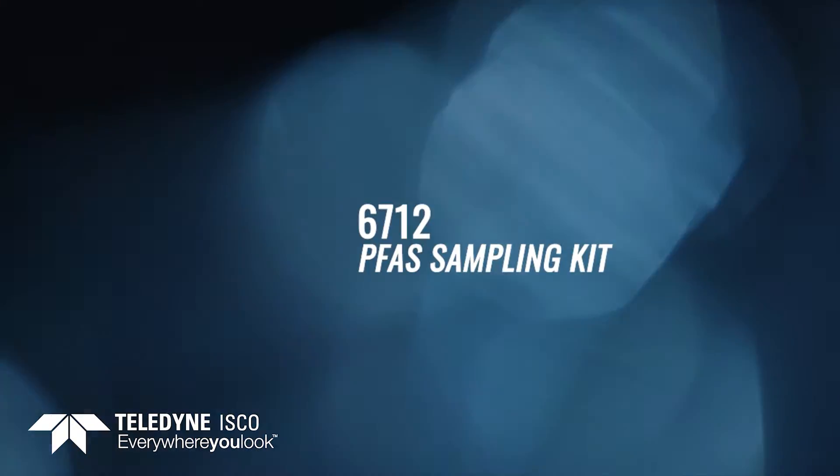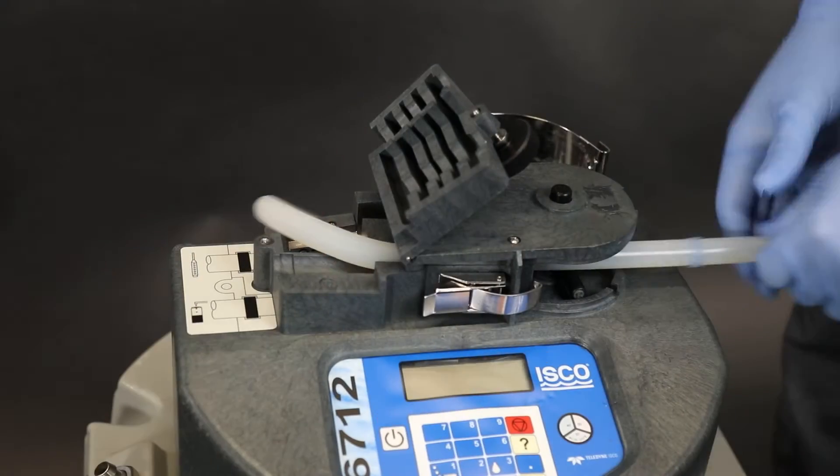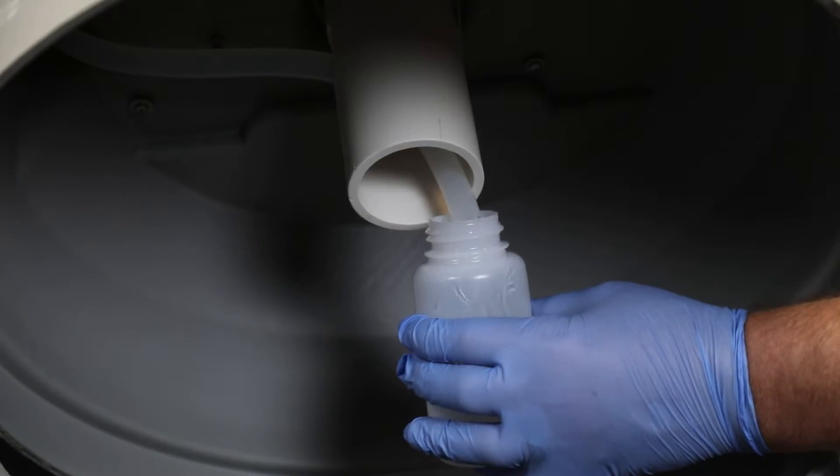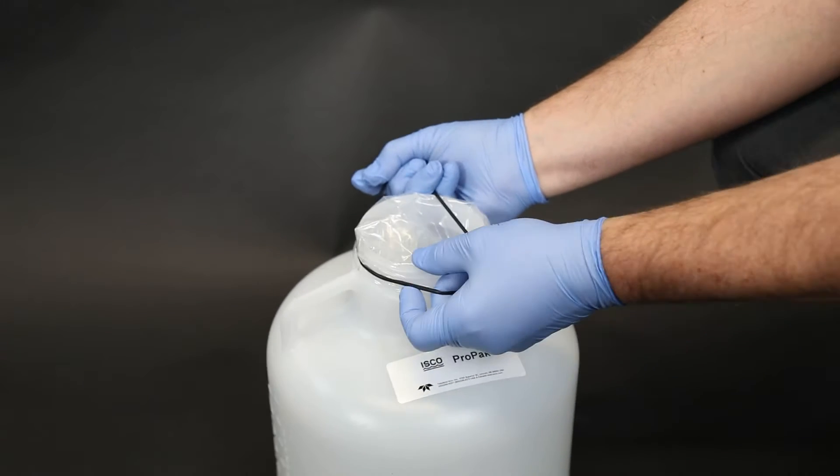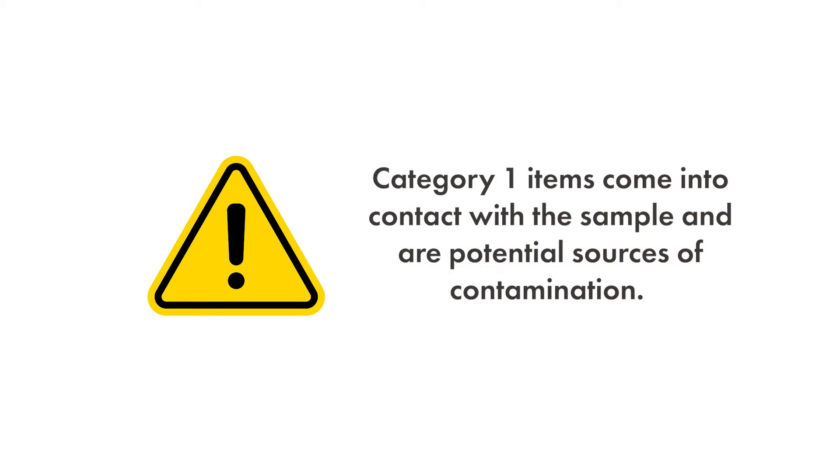This video guide will help you set up your 6712 sampler for success using Teledyne Isco's new PFAS Sampling Kit. Please refer to the PFAS Sampling Kit manual for more information, including how to better avoid PFAS contamination. This video will explain how to install and use Category 1 items.